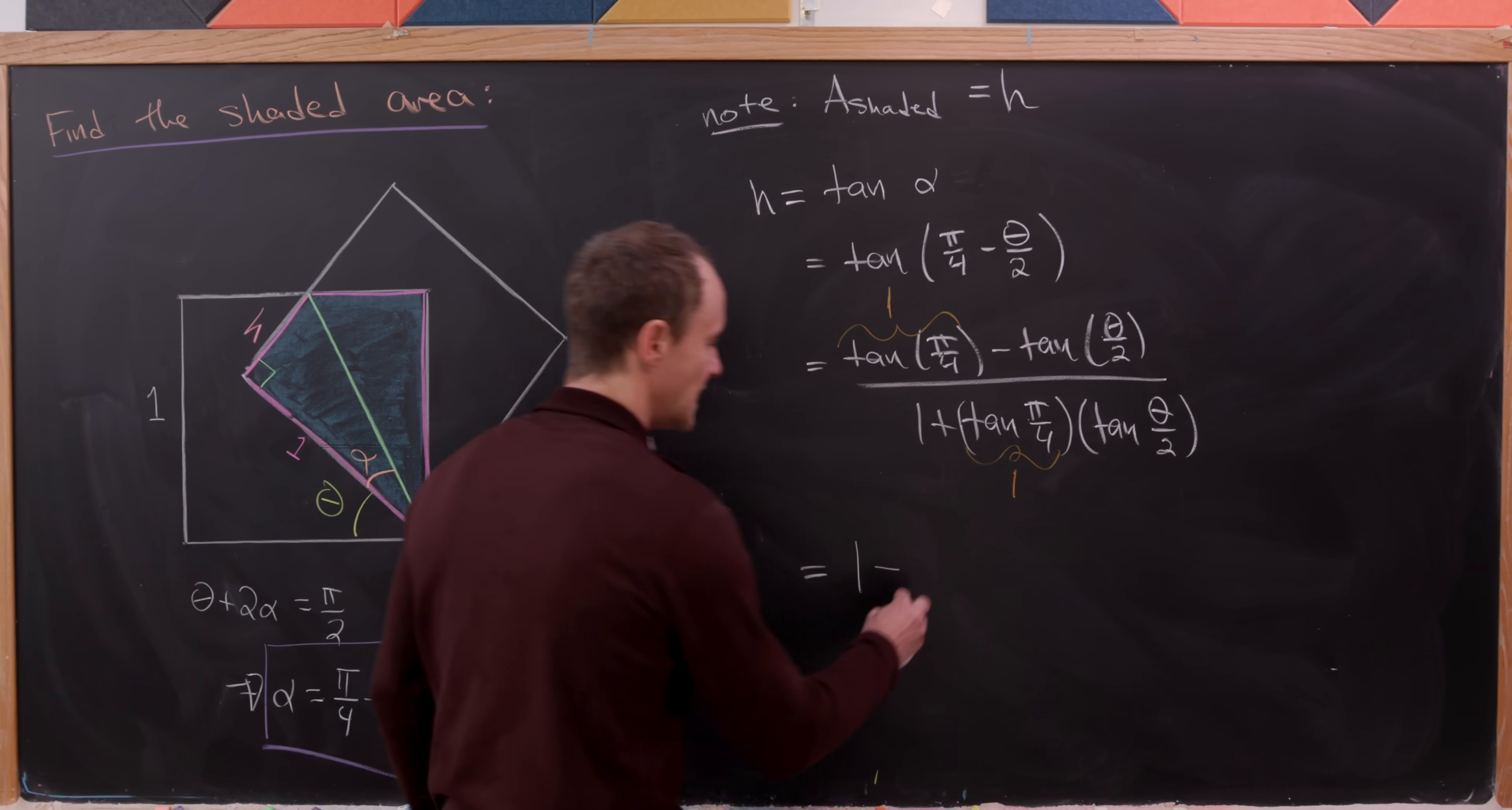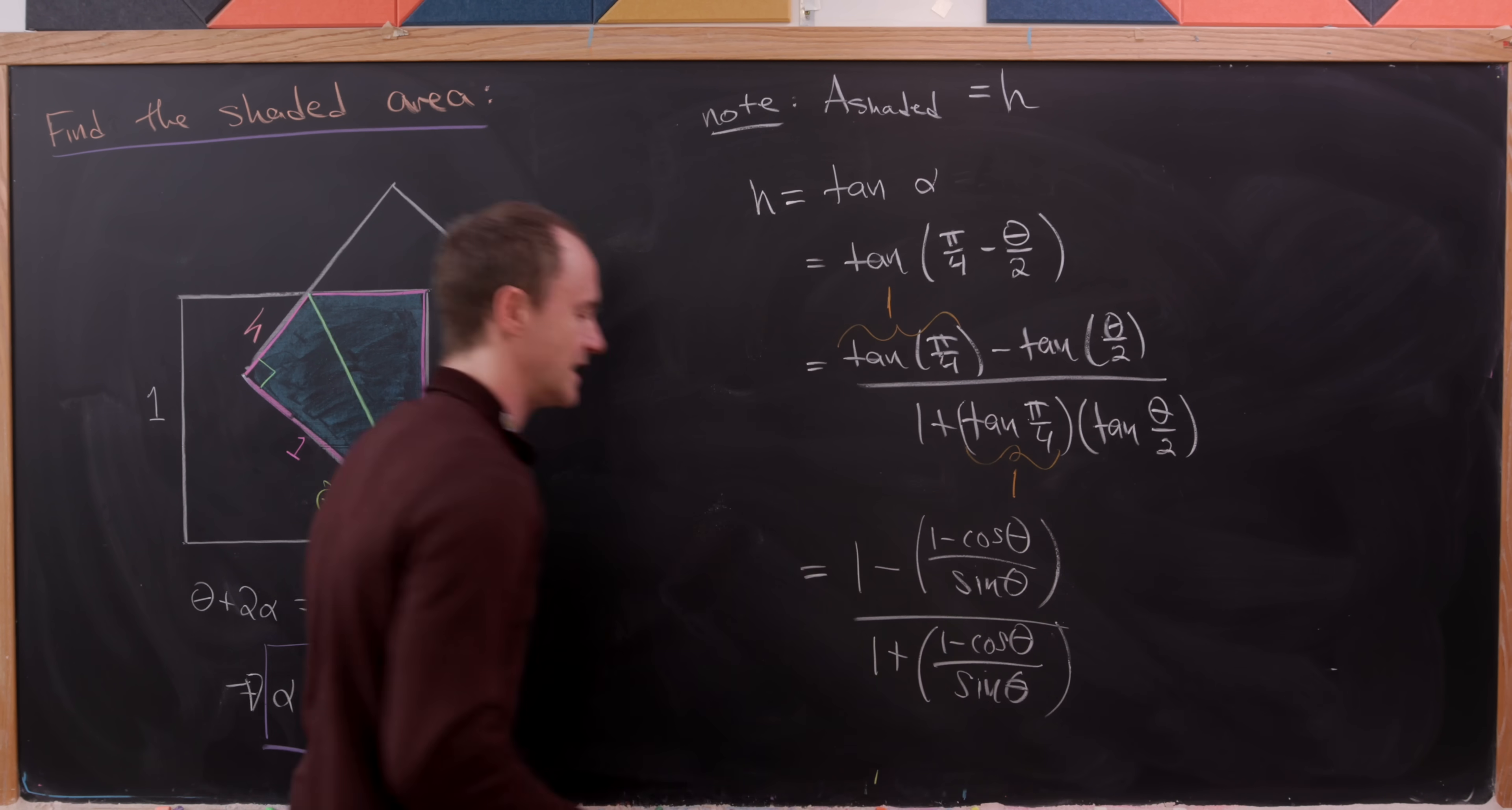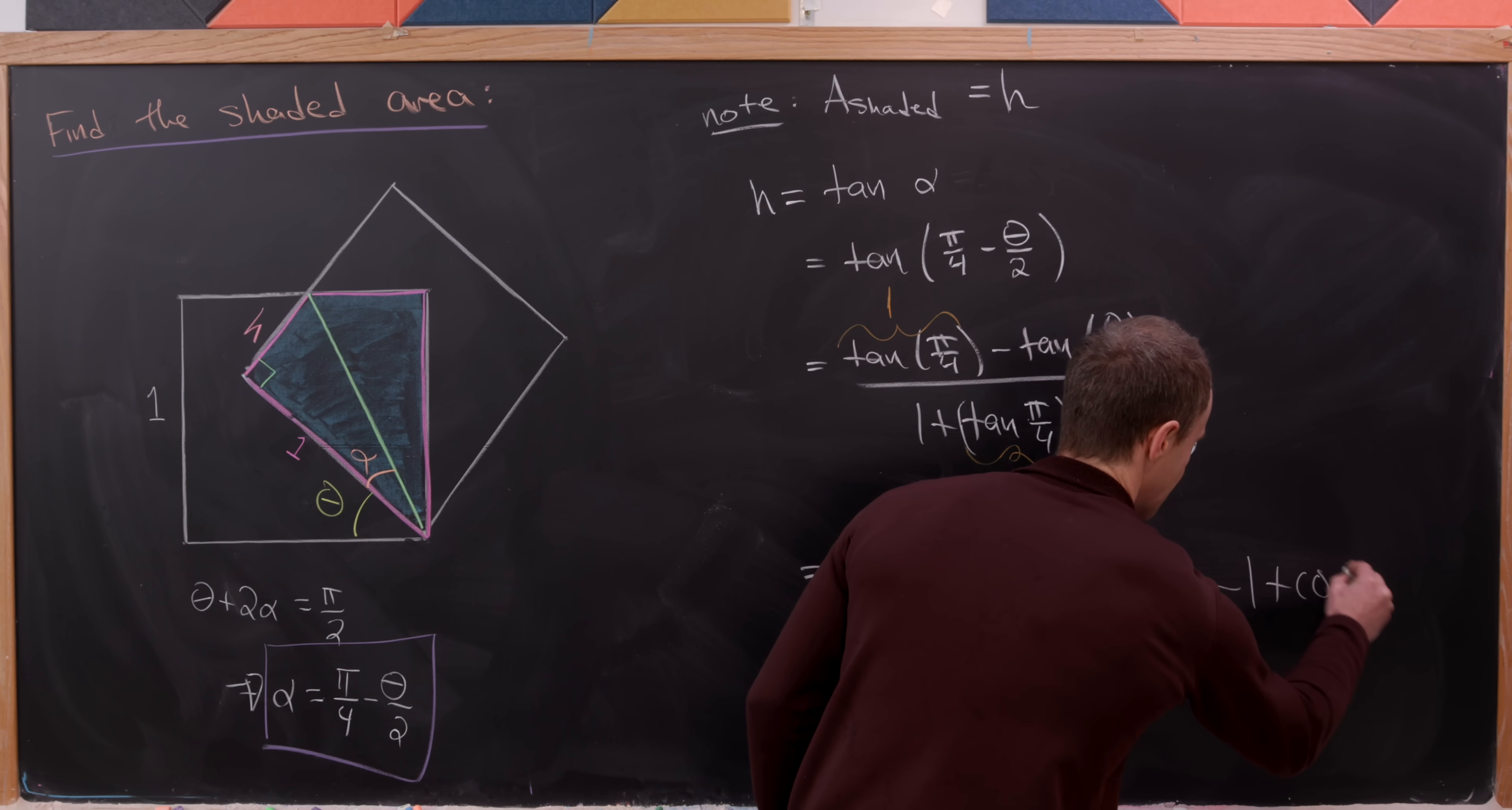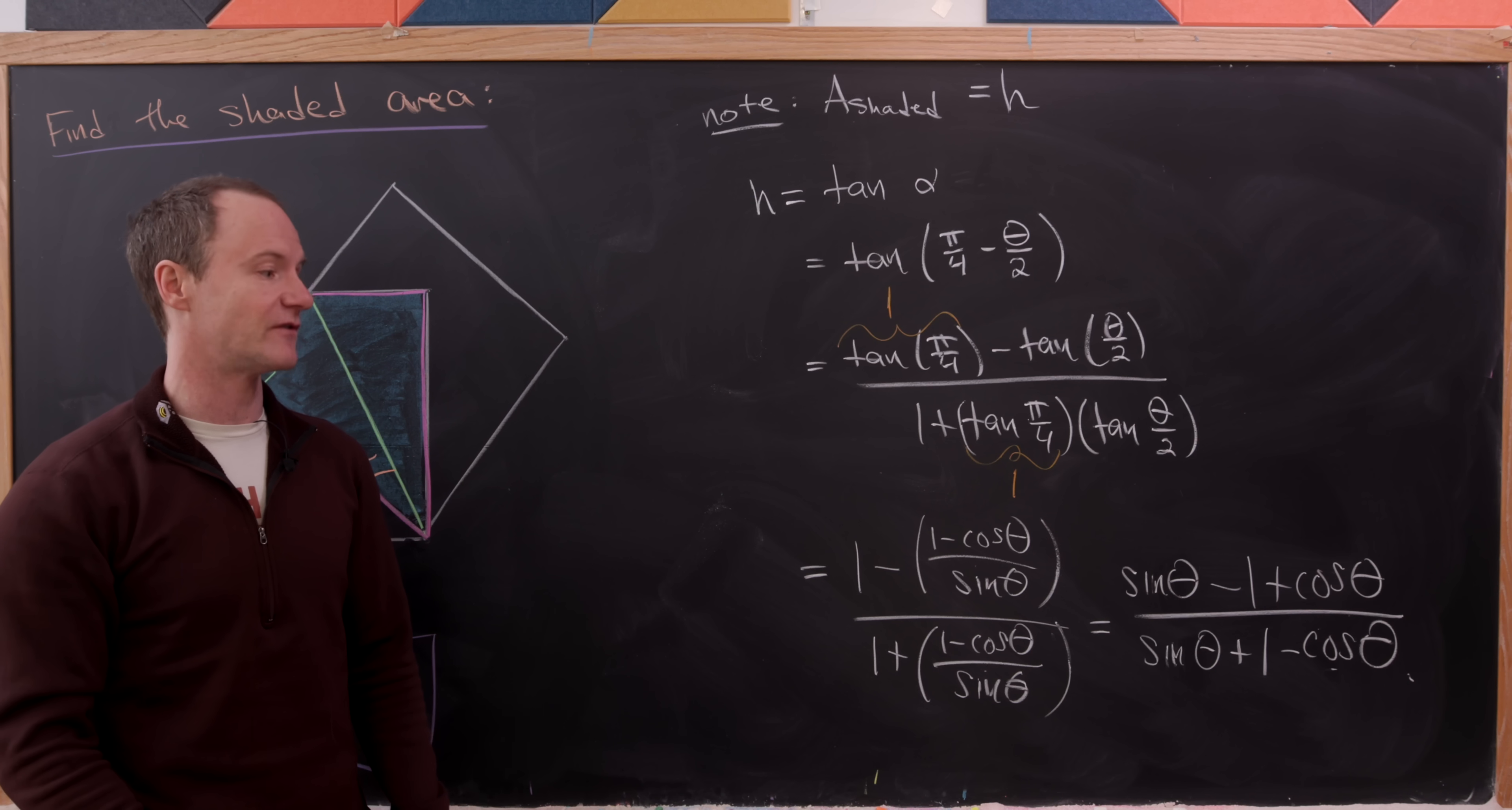So we'll have 1 minus and then here we'll have 1 minus the cosine of theta over the sine of theta. So just FYI that's our half angle formula for tangent and then this is going to be all over 1 plus well the same thing. So cosine theta over the sine theta or 1 minus cosine theta over sine theta. Now it kind of makes sense to multiply the numerator and the denominator by the sine of theta and let's observe that that's going to give us the sine of theta minus 1 plus the cosine theta. So that's what we have in the numerator and then in the denominator we have the sine of theta plus 1 minus the cosine of theta. And I think that's probably close to the simplest expression that we could have for this area.